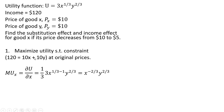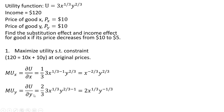The exponent on the X term comes down in front: 1/3 times 3, we just get 1. We subtract 1 from the exponent on the X term and we're left with the result for MU_X. For the marginal utility of good Y, we take the partial derivative with respect to good Y. The exponent on the Y term, 2/3, comes down in front: 2/3 times 3 leaves us with 2. We subtract 1 from the exponent on the Y term and we're left with the result for MU_Y.